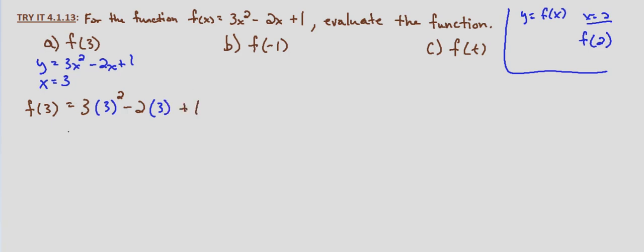And then we simply simplify. This equals 3 times 9 minus 6 plus 1, which equals 27 minus 6 plus 1, which equals 19 plus 1, which equals 20. So f of 3 is 20.